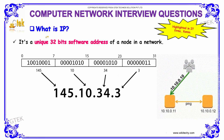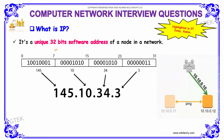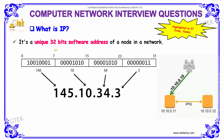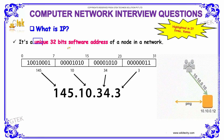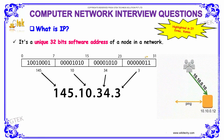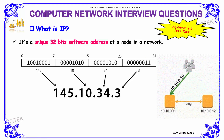What is IP? IP is a unique 32-bit software address of a particular node in a network. It is used for identifying a particular node uniquely over a network.